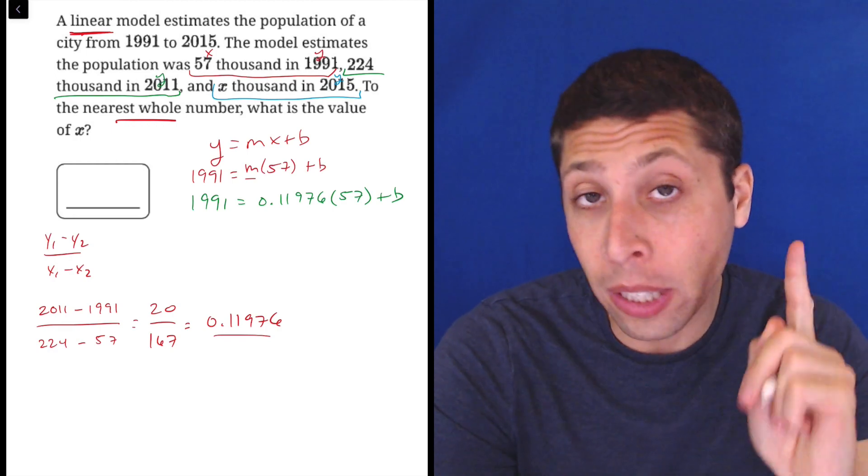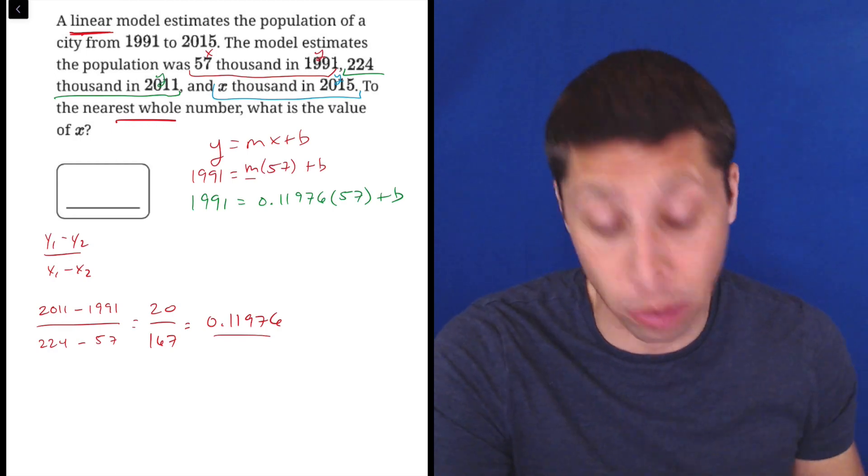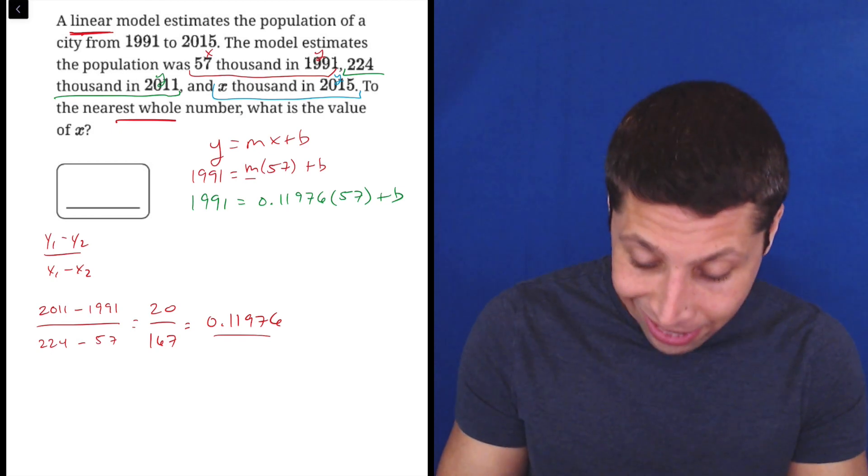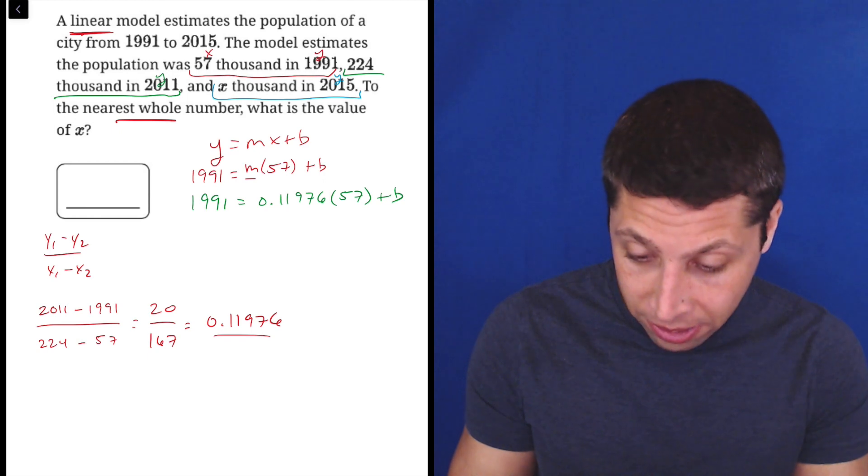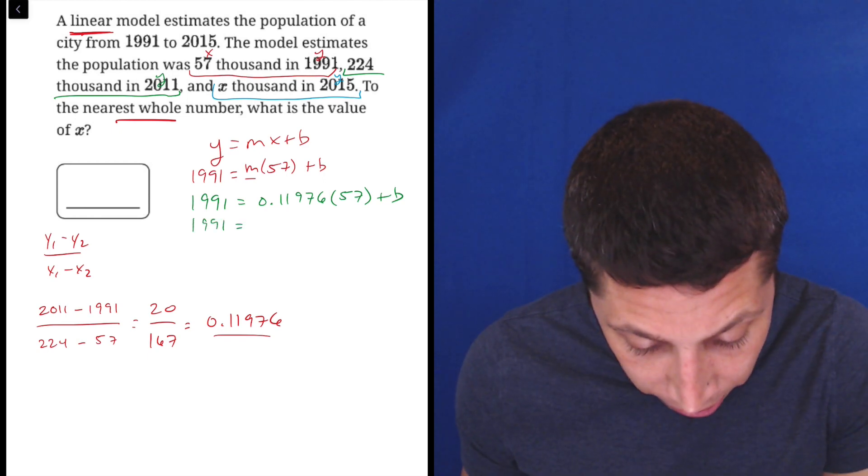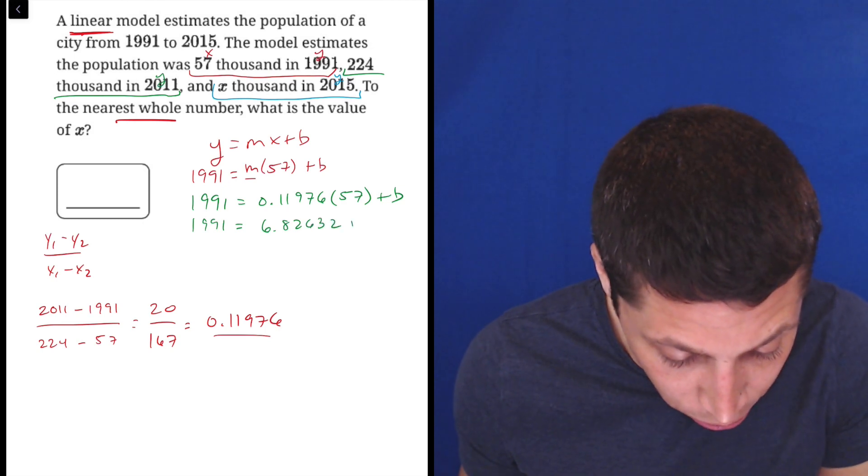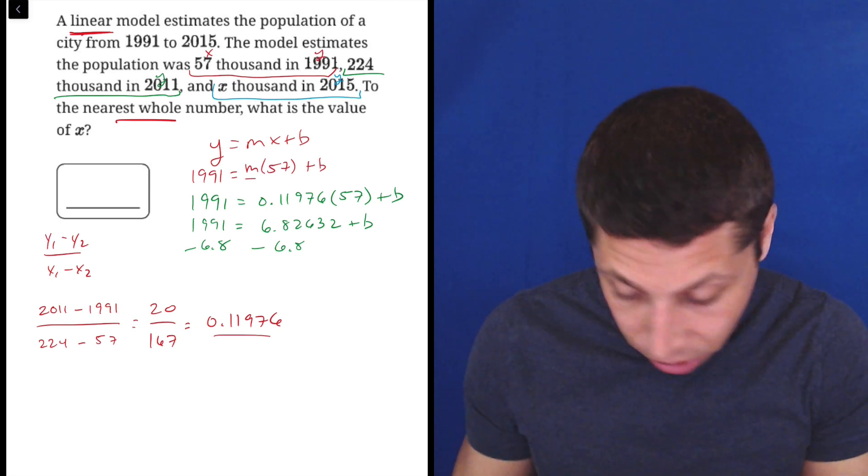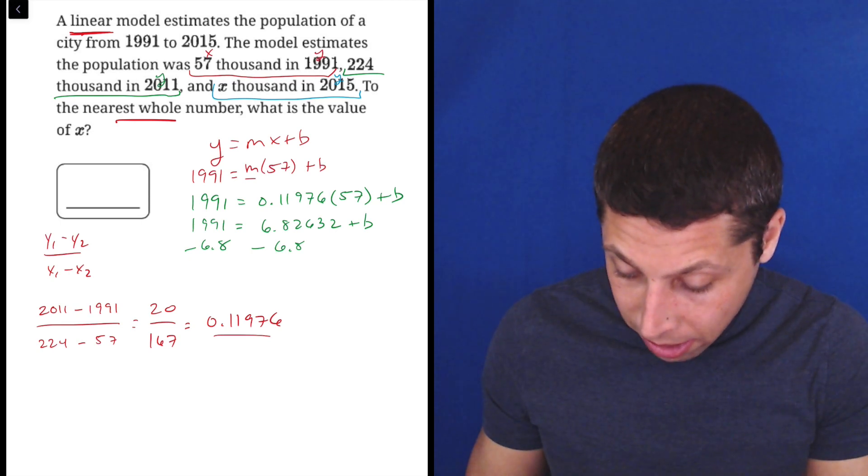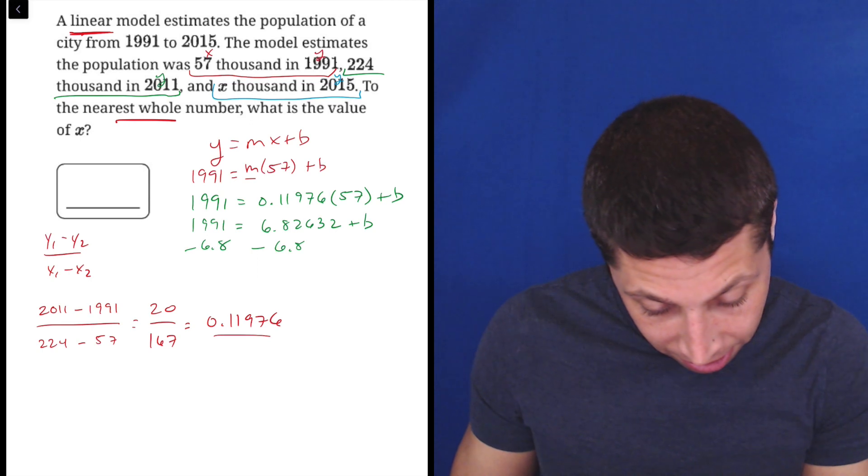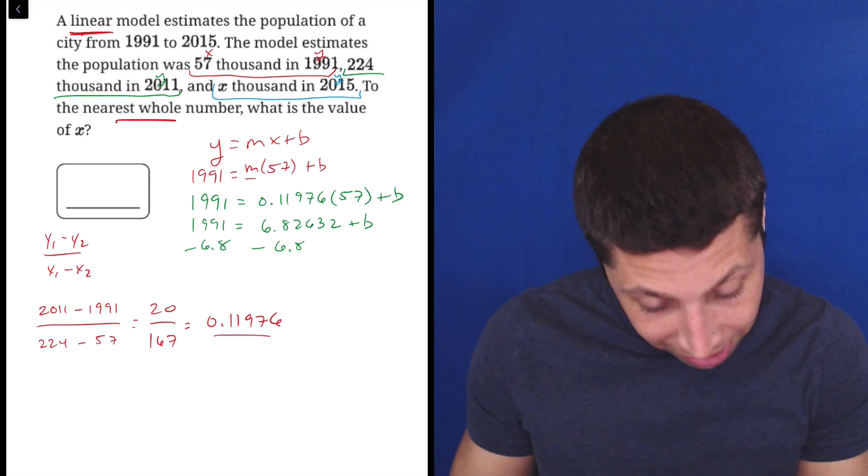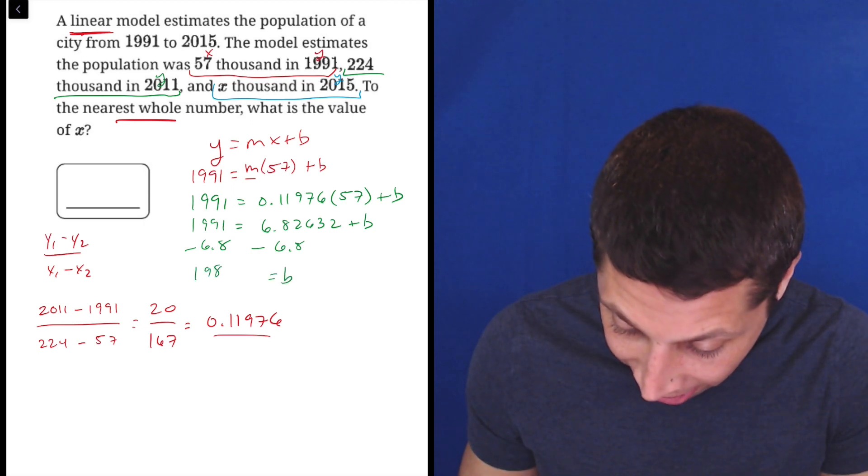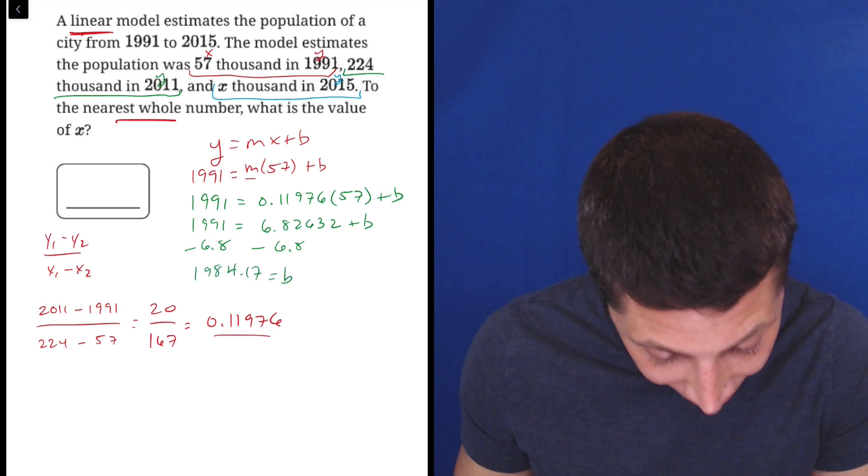Now we have an equation where only one variable is missing, one piece. So we can find that just by doing some algebra. So let's do 0.11976 times 57 and we get 1991 is equal to 6.82632 plus b. So I'm going to subtract this number from both sides. So 1991 minus 6.82632 and we get that b is equal to 1984.17. So let's leave it at that.